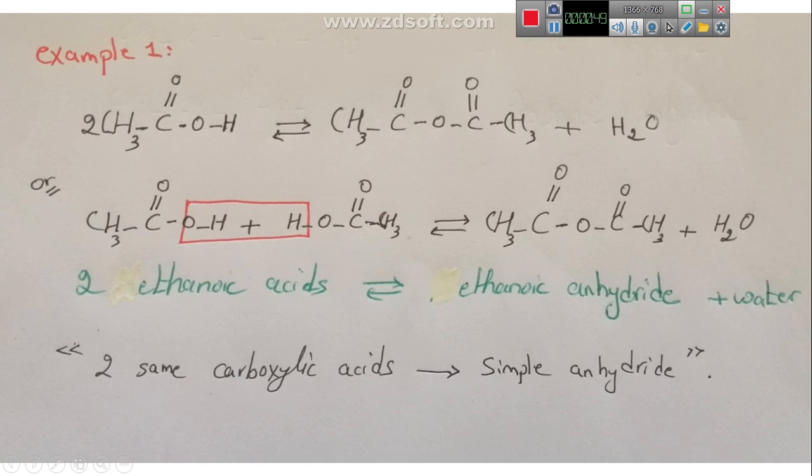As we know, these two ethanoic acids are similar, same carboxylic acid. Then, the formed anhydride is a simple anhydride because, as you can see here, this is the middle O. On the right side, we have two carbons, on the left side, two carbons, and we call it ethanoic anhydride. No need to repeat to call it ethanoic, ethanoic anhydride. You call it once because it's a simple anhydride, ethanoic anhydride.